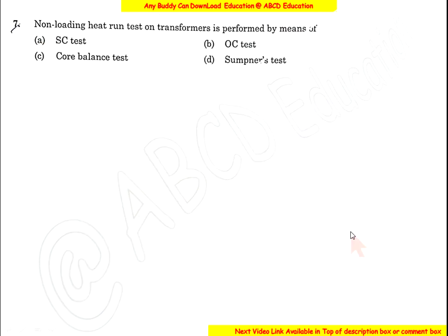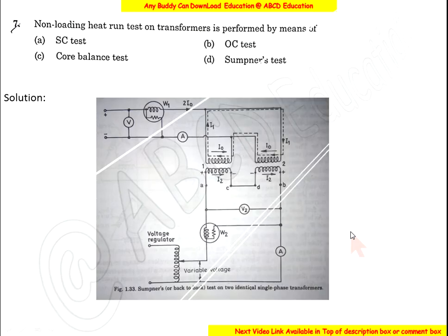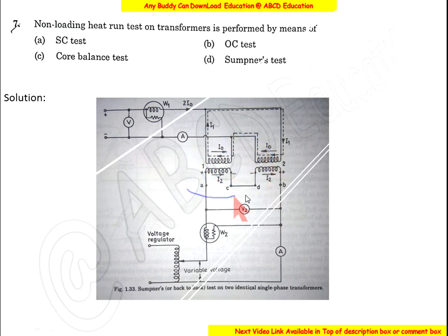Question 7: The non-loading heat run test on a transformer is performed by means of the Sumpner's test. In the Sumpner's test, we find the maximum temperature capability of the winding, which is why it is known as the heat run test on the transformer. The correct option is D.